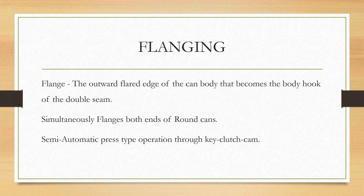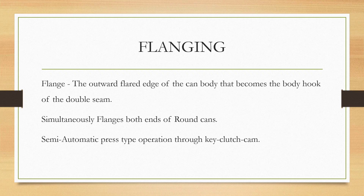Flanging: if you take a can, there is one part called the flange. This flange always helps in sealing — that is, seaming — of the upper lid. The flange is a part of the body of the can that helps in the seaming or sealing process of the upper and bottom lid. There is one outer flat edge on the top of the can.